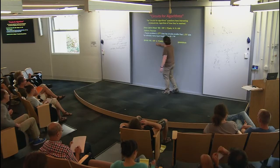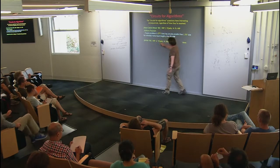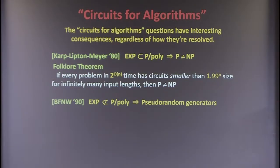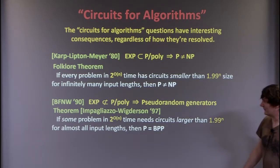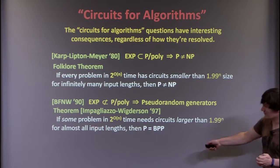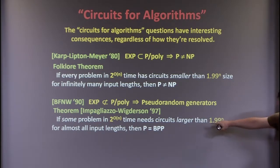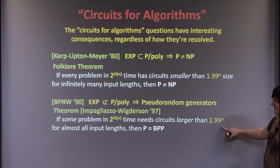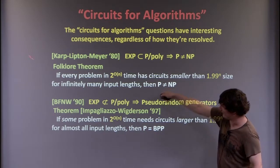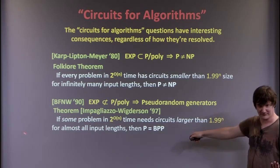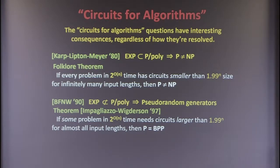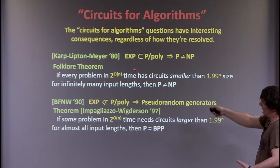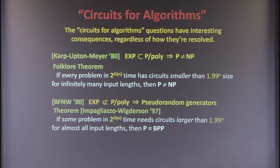On the other hand, suppose EXP doesn't have polynomial size circuits — then you get pseudorandom generators. A theorem by Russell and Avi says that if some problem in 2^{O(n)} time needs circuits larger than 1.99^n in size for almost all input lengths, then P equals BPP. So either way — upper bounds or lower bounds — you get extremely interesting results in complexity theory.